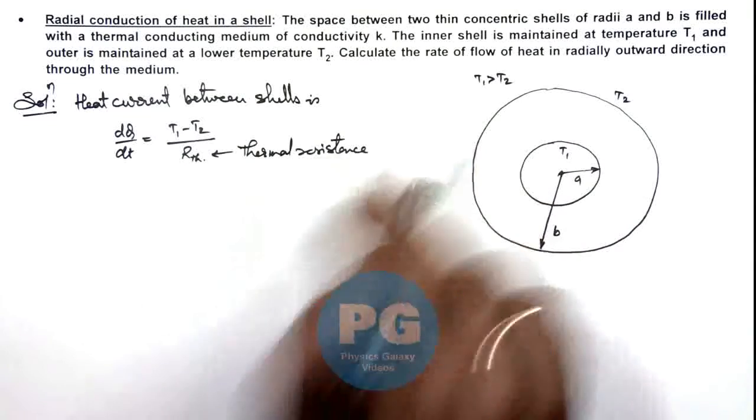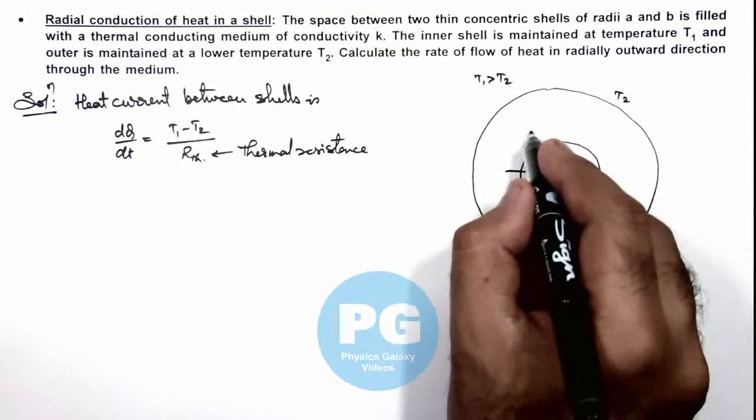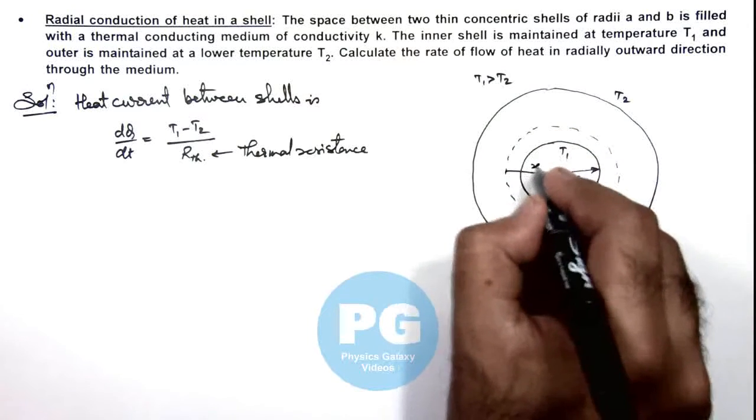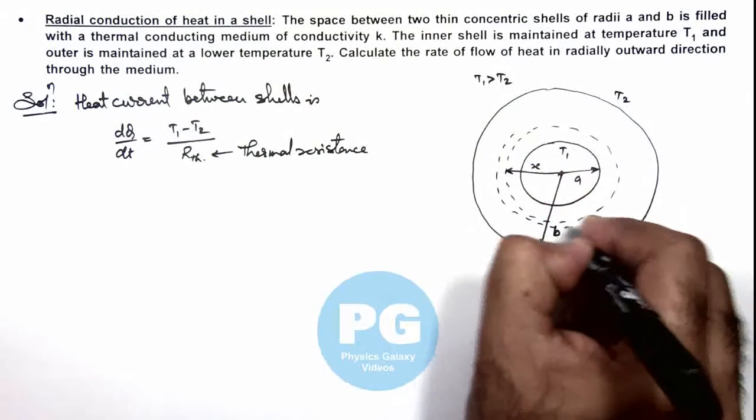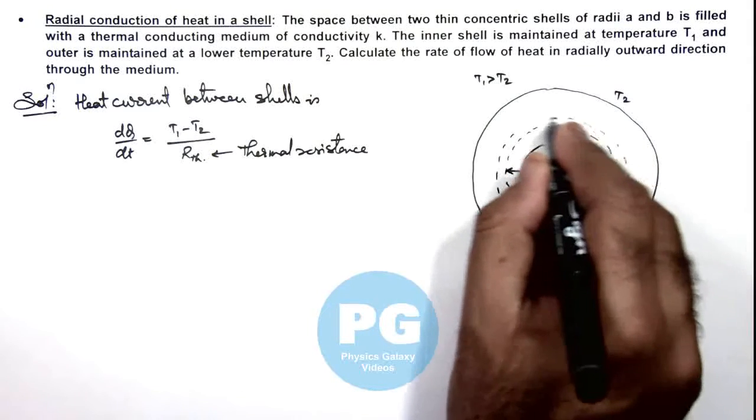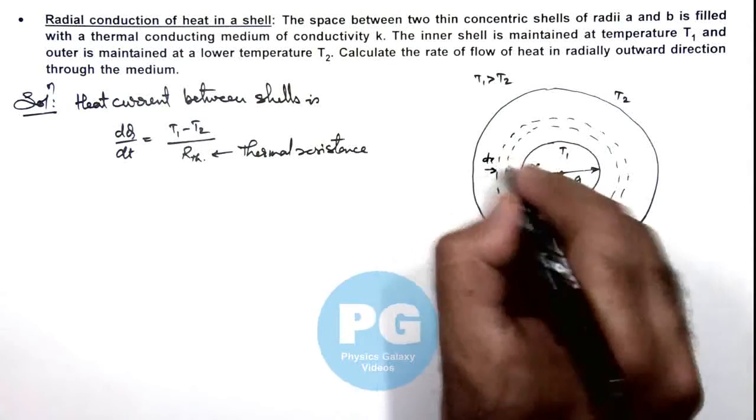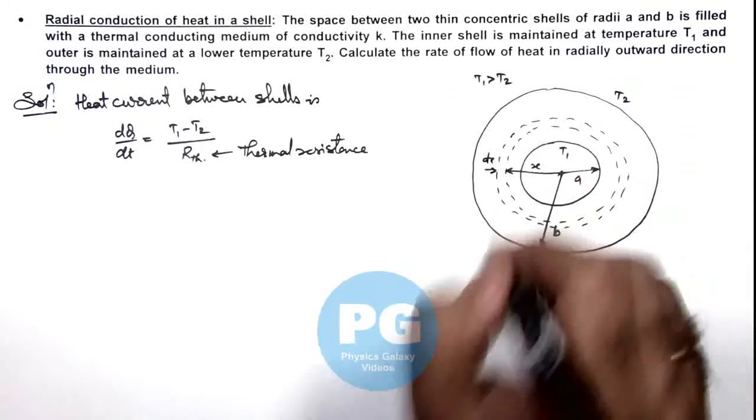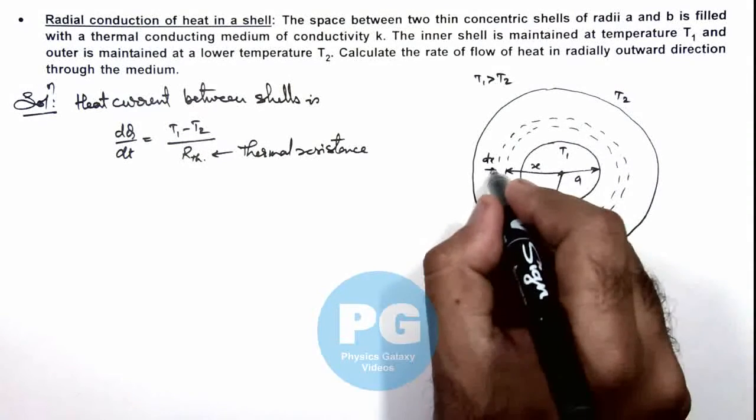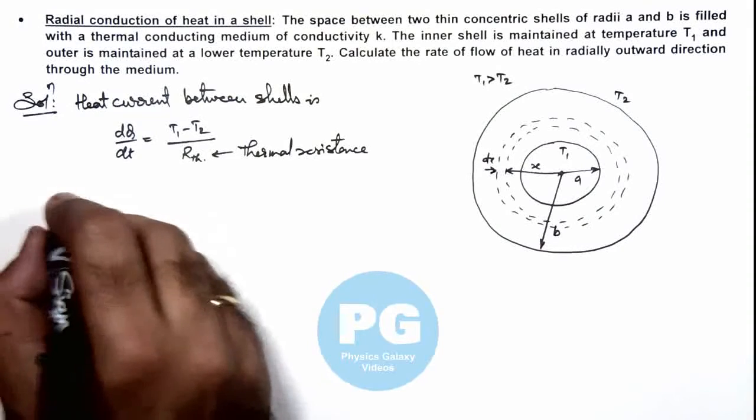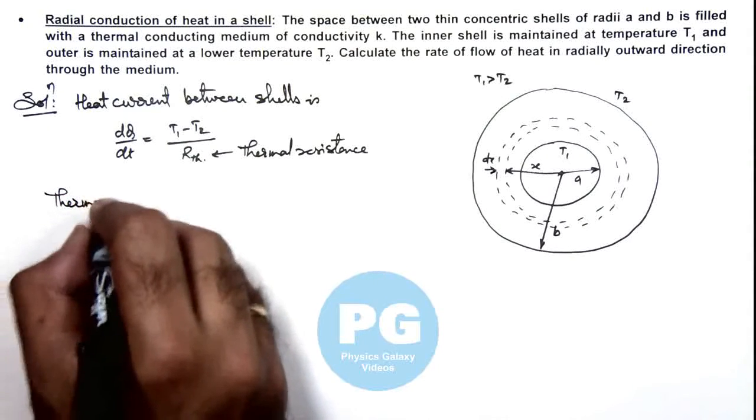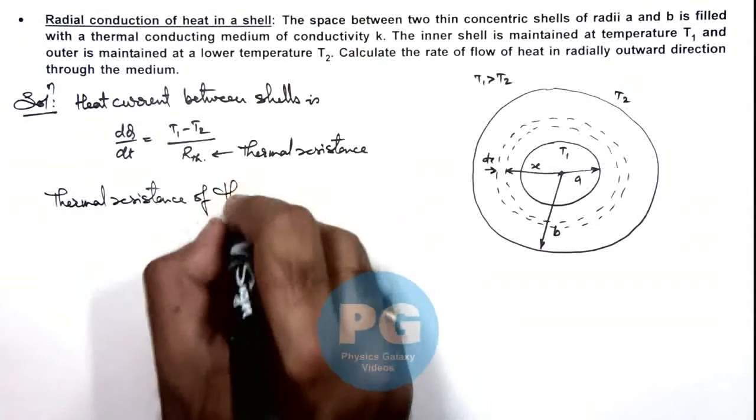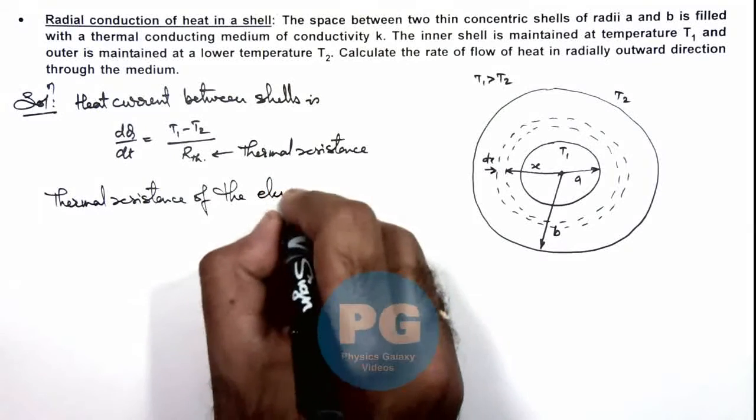Now to calculate this thermal resistance, we need to consider an elemental shell over here which is of radius x, and we consider it to be of width dx. Now in this material shell, we can write down the thermal resistance, which we write as the thermal resistance of the elemental shell.